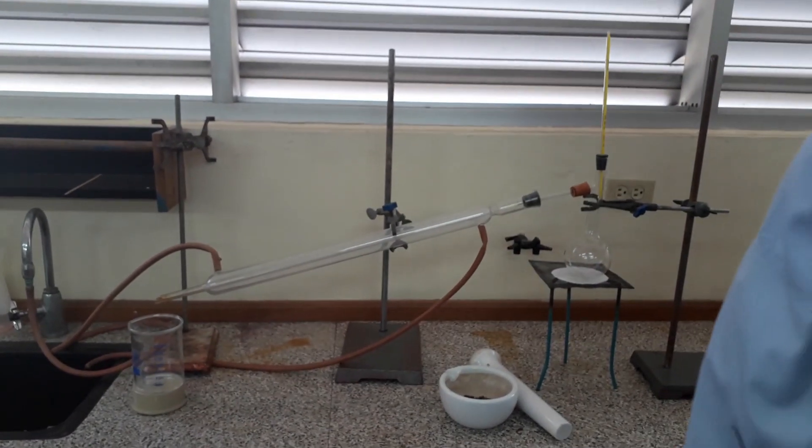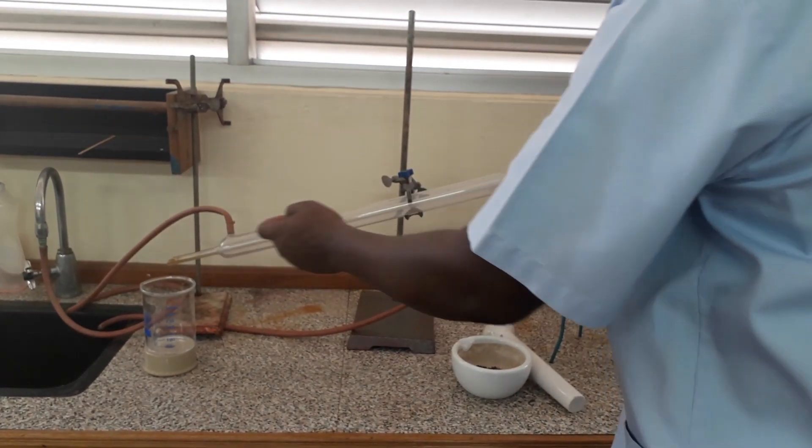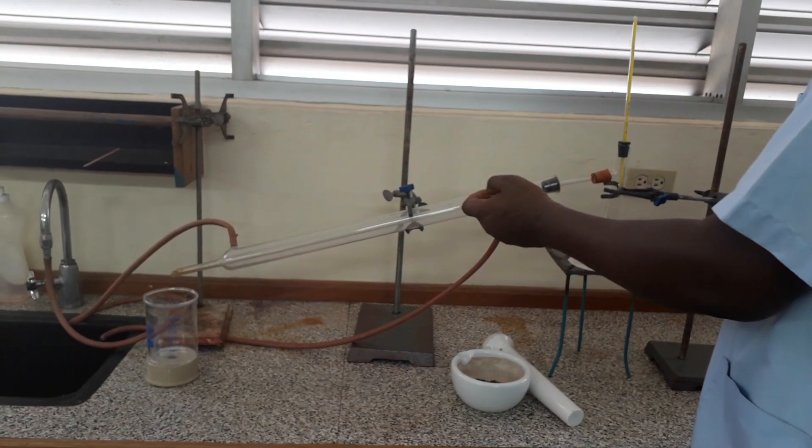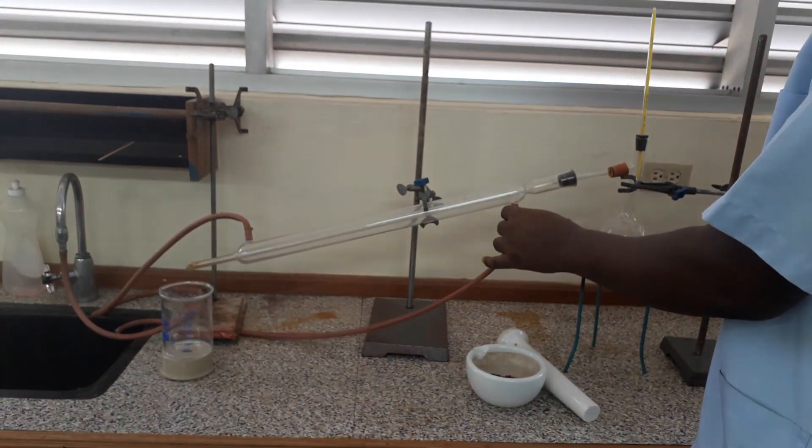Now, in the condenser, you're going to have water coming in at the bottom and comes up in the outer tube and comes out. So, cool water comes in at the bottom, hot water comes out at the top.